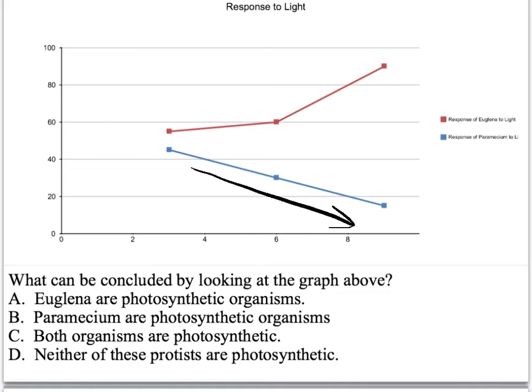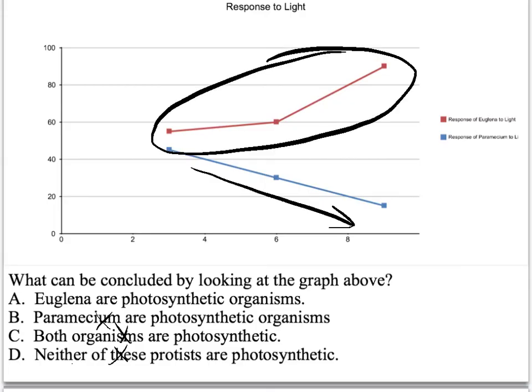It actually decreases its response over time. So that means both organisms are not photosynthetic, and paramecium are not photosynthetic. And euglena, based off its response, is photosynthetic. Okay. That's why I had already crossed out D. I apologize for giving the answer away a little bit early.